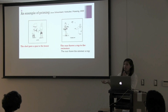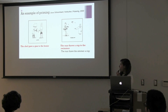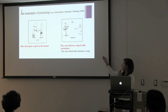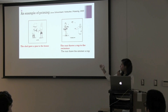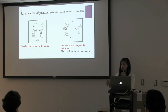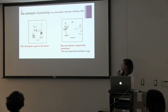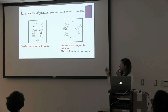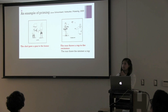An example of priming would be: if a participant was shown the first image to your left, and then they heard the sentence 'the chef gave a gun to the boxer,' then when the participant is presented the second image to your right, they may respond in two ways when asked to describe the picture. They may say 'the nun threw a cup to the swimmer' or 'the nun threw the swimmer a cup.' The first sentence in red would be an example of priming, because they constructed the sentence in the same syntactic structure as the sentence they heard previously.